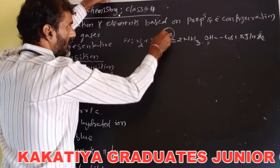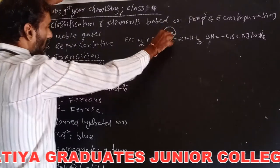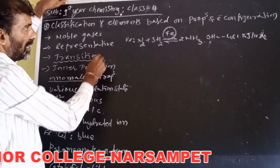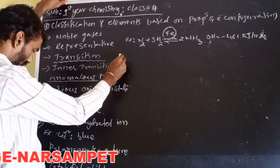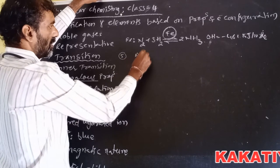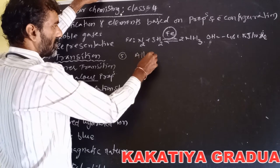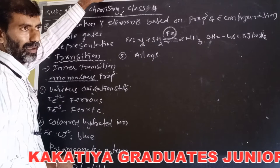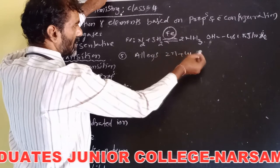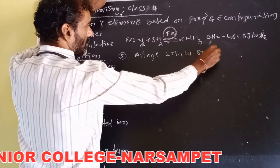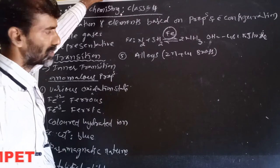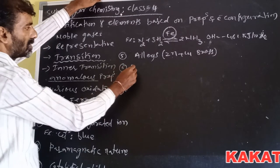So iron acts as a catalyst, and it belongs to transition elements. The fifth property is the formation of alloys. For example, Zn plus Cu gives brass.